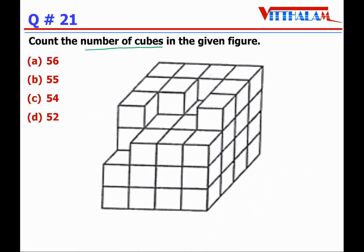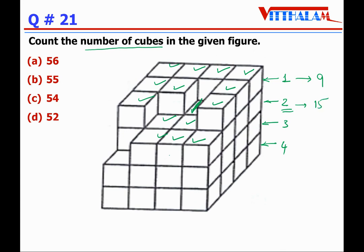Question 21: Count the number of cubes in the given figure. There are four layers. Layer 1 has 9 cubes (1 through 9). Layer 2 has cubes up to 15, so 6 more cubes. Layer 3 adds one more to make 16. Layer 4 is the same as layer 3, so also 16. Total: 9 plus 15 plus 16 plus 16 equals 56. So the answer is 56.